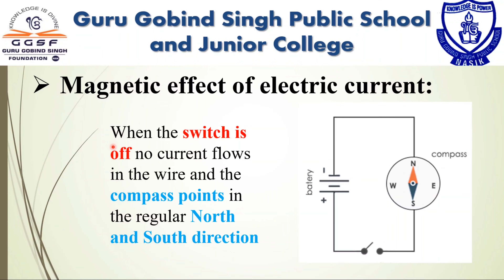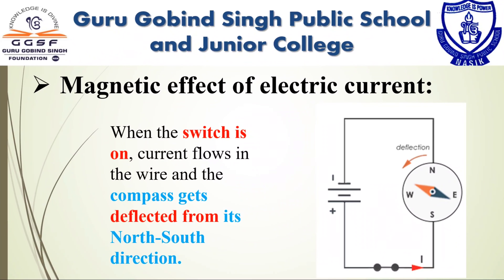Oersted observed that when the switch is off, no current flows in the wire and the compass points in the regular north-south direction. But when he put the switch to the on position, current flows in the wire and the compass gets deflected from its north-south direction. When the switch is turned off again, the compass returns to its original north-south position.